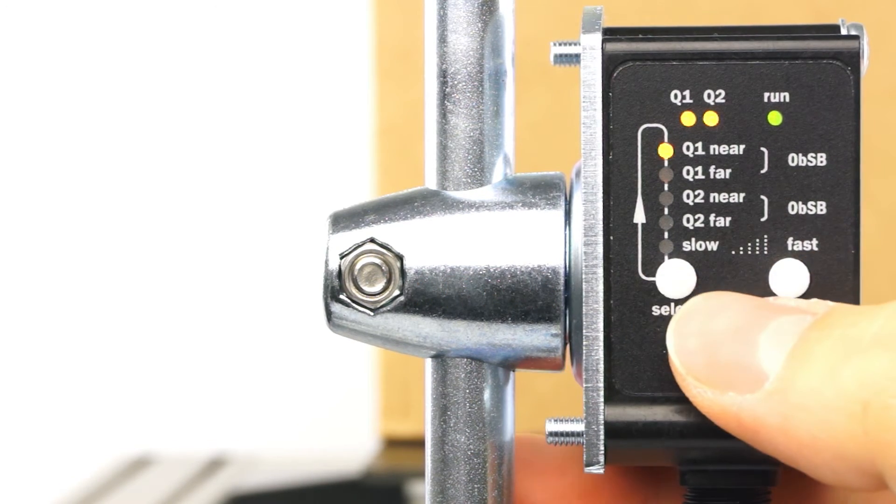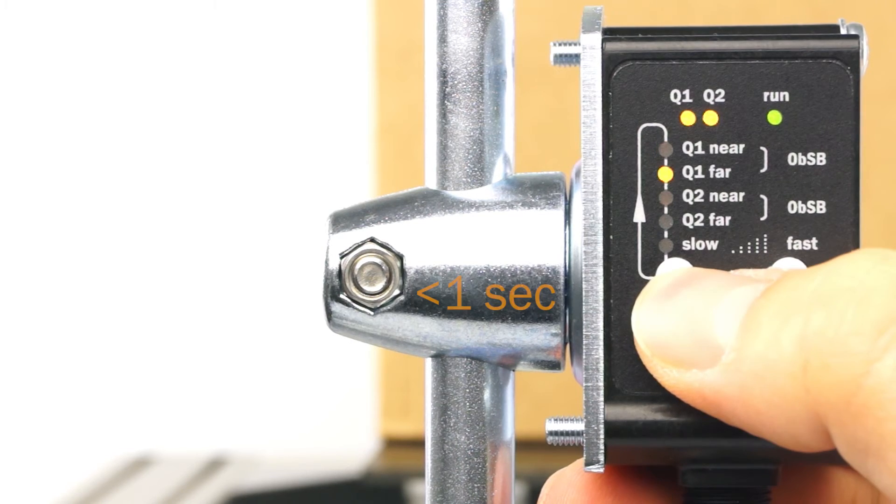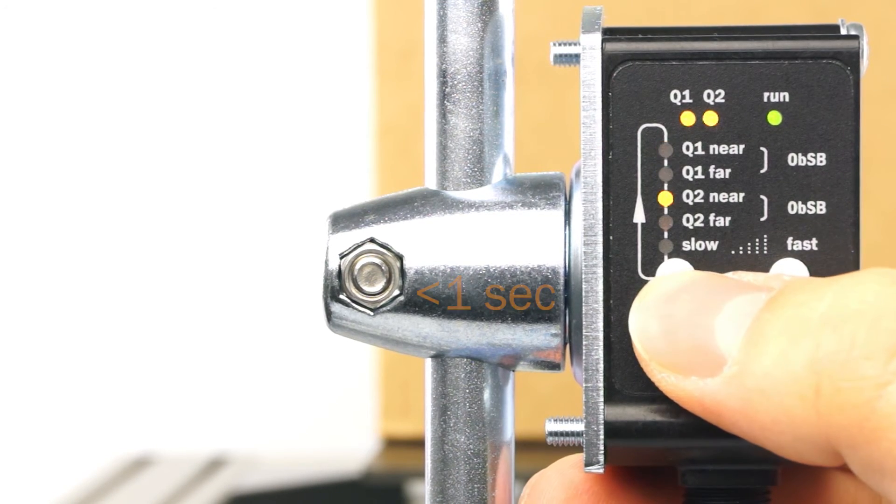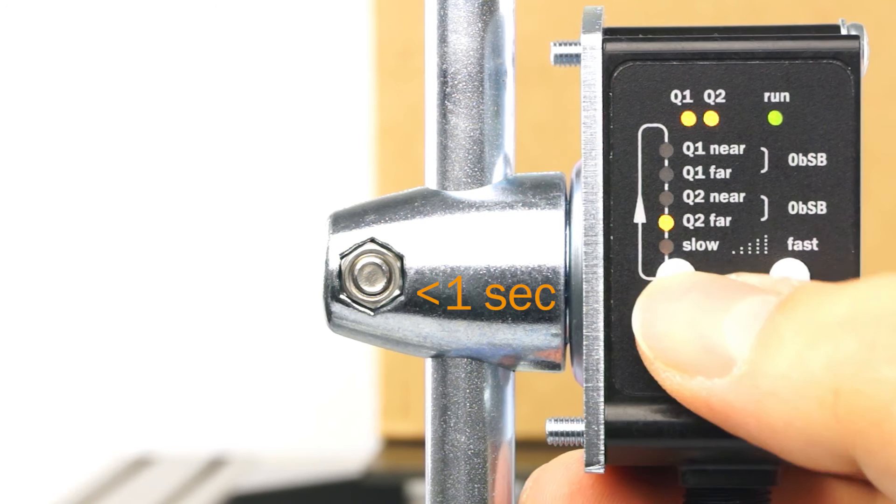The LED Q1 near diode comes on. After that press the select button 5 times. The lowest LED is now blinking.